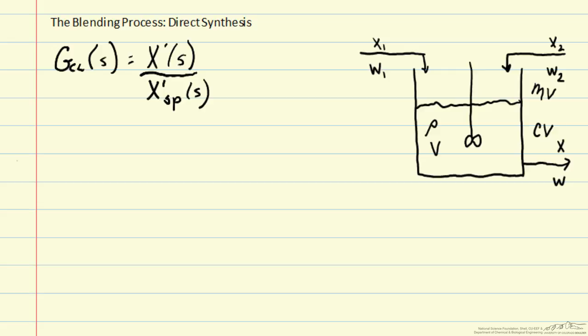So ideally, we would like this to be 1. We would like x prime to equal x prime set point. But this is usually not possible in practice.